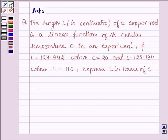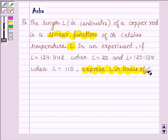The length L in centimeters of a copper rod is a linear function of its Celsius temperature C. In an experiment, if L equals 124.942 when C is 20, and L equals 125.134 when C equals 110, express L in terms of C.